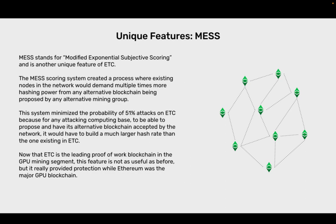Unique features: MESS. MESS stands for Modified Exponential Subjective Scoring and is another unique feature of ETC. The MESS scoring system created a process where existing nodes in the network would demand multiple times more hashing power from any alternative blockchain being proposed by any alternative mining group. This system minimized the probability of 51% attacks on ETC because for any attacking computing base to propose and have its alternative blockchain accepted by the network, it would have to build a much larger hash rate than the one existing in ETC. Now that ETC is the leading proof-of-work blockchain in the GPU mining segment, this feature is not as useful as before, but it really provided protection while Ethereum was the major GPU blockchain.